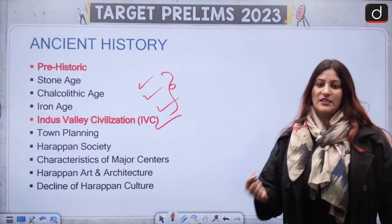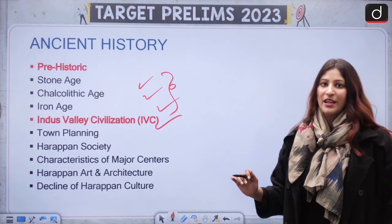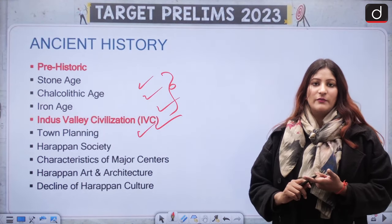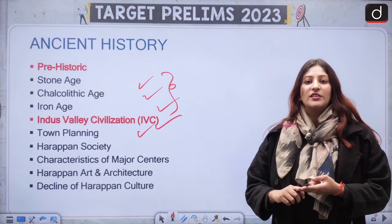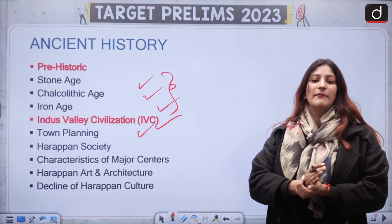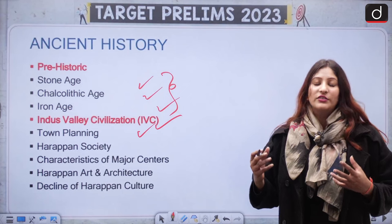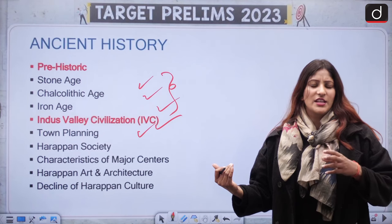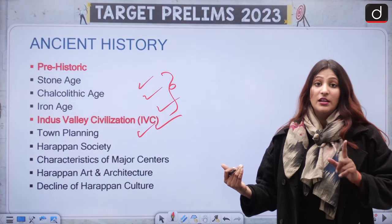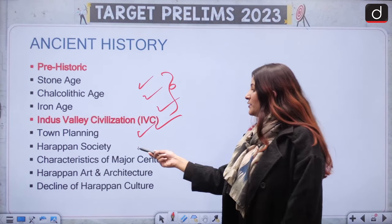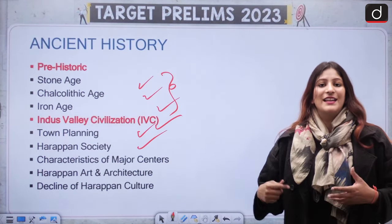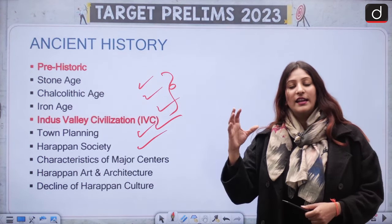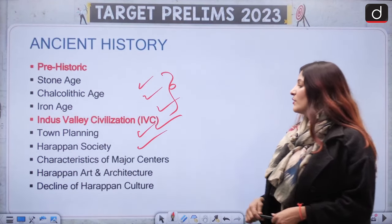IVC is one of the most important sections of Ancient History. How did the IVC people plan their towns — the grid system can be asked, which city was divided into different regions like the citadel and lower town. Harappan society — was it a priest-led society, was it a society of oligarchs, was there a bureaucratic influence? The characteristics of major centres are also important as Harappan cities are getting inscribed in major lists.